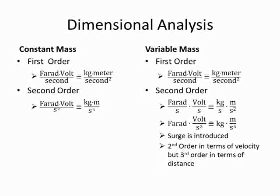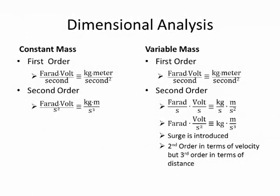That is equivalent to the mechanical kilogram meter per second cubed. So it is possible to interpret these inertia elements as representing the instantaneous value of inertia. Notice that we get a factor of meter per second cubed — that is the introduction of an effect that is called surge. The mechanical equations are second order when they are taken in terms of velocity, the power conjugate variable. But when we take it in terms of distance or space, it becomes a third order result.